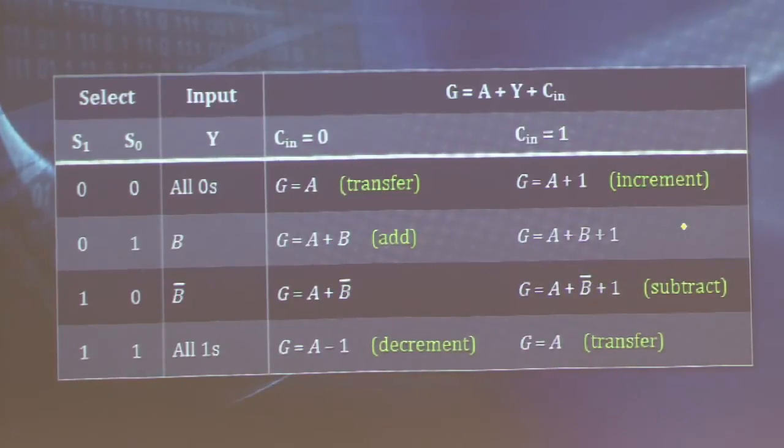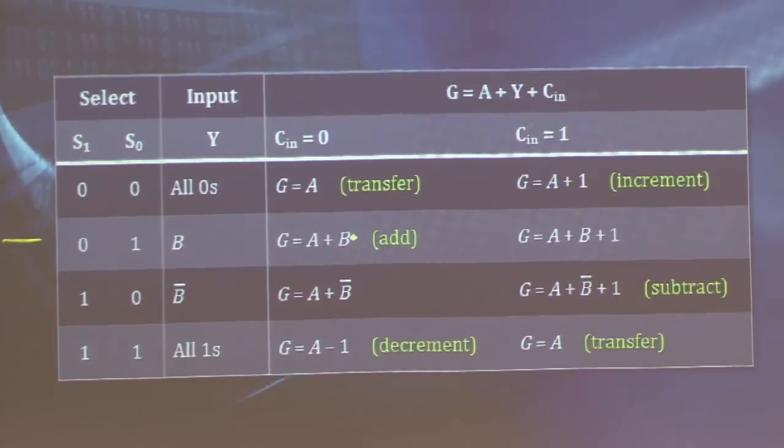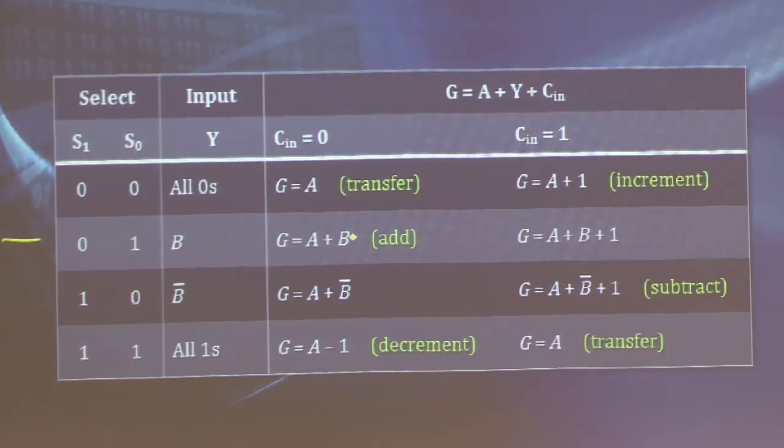The other option is to just let B propagate through as it is. In this case, if there is no carry-in, I will just get A plus B at the output of this arithmetic circuit. If there was a carry-in, then I will get A plus B plus 1, which doesn't have a name to this operation. But it might come up sometimes, and the compiler has the ability to actually choose this operation.